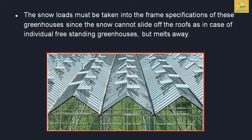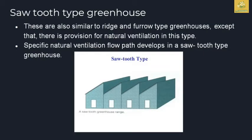This is a standing greenhouse. For rain and snow, the frame specification is important. This is an individually standing greenhouse with benefits including easier use of covering materials. For automation, it can be of extra size. The sawtooth type greenhouse is similar to the ridge-and-furrow type. It allows natural ventilation with easy air path flow, which is an important benefit.